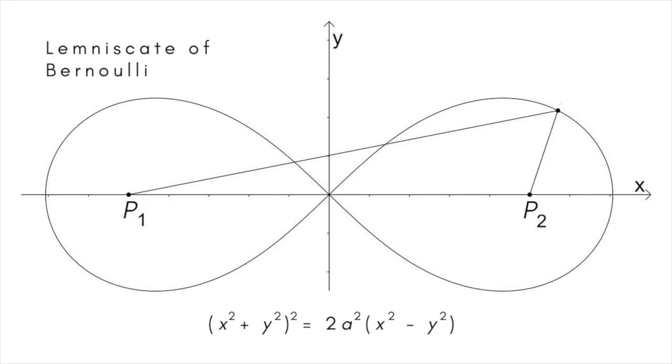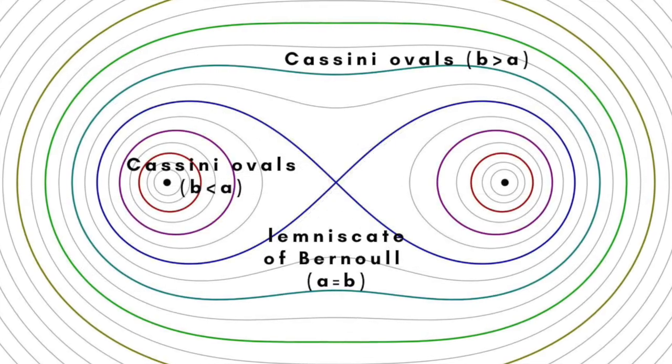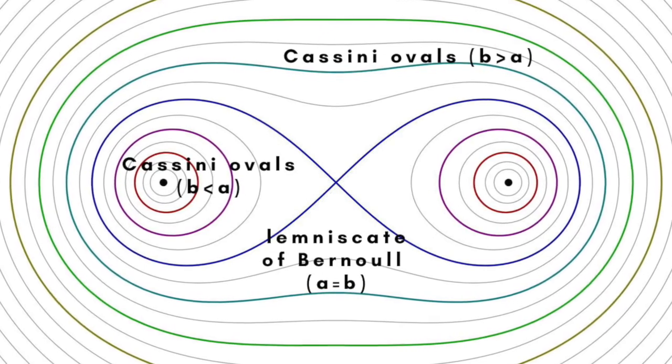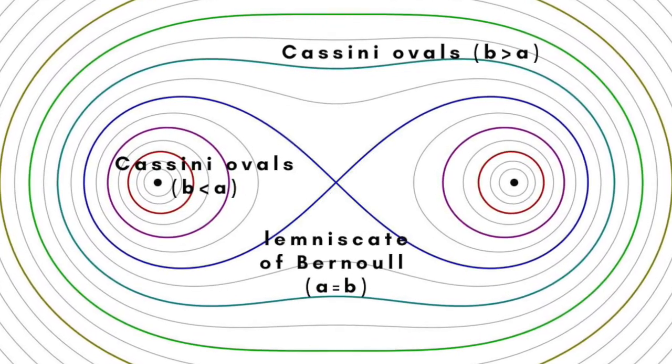It has the Cartesian equation x squared plus y squared all squared equals 2a squared times x squared minus y squared. At the time he wrote his article, Bernoulli wasn't aware that the curve he was describing was a special case of a Cassini oval, when a equals b.